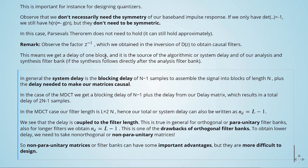This is true in general for orthogonal or para-unitary filter banks, and also for longer filters we obtain Nd is equal to l minus 1. This is one of the drawbacks of orthogonal filter banks. To obtain lower delay, we need to take non-orthogonal or non-para-unitary matrices. So non-para-unitary matrices or filter banks can have some important advantages, but they are more difficult to design.